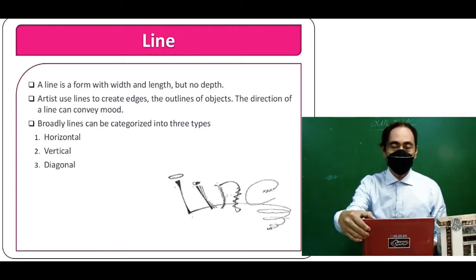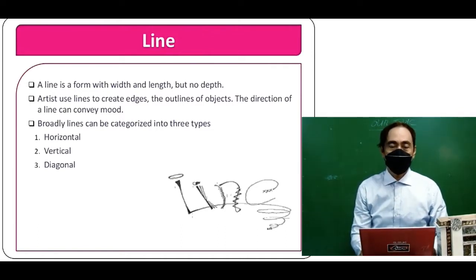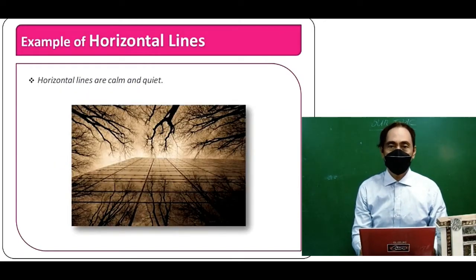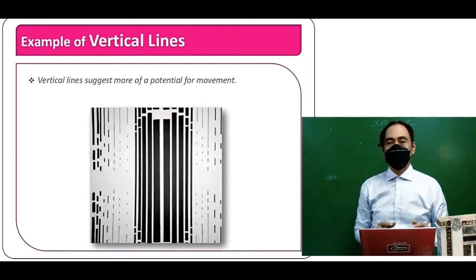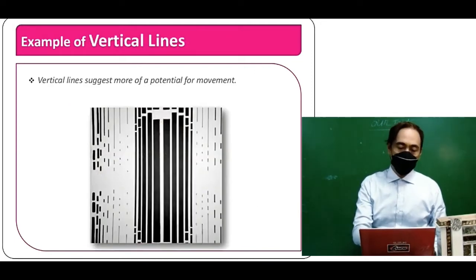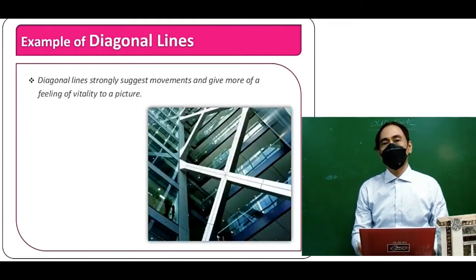Broadly, lines can be categorized into three types: horizontal, vertical, and diagonal. Examples of horizontal lines are calm and quiet. Examples of vertical lines exist with more potential for movement. Examples of diagonal lines strongly suggest movement and give more of a feeling of vitality to a picture.